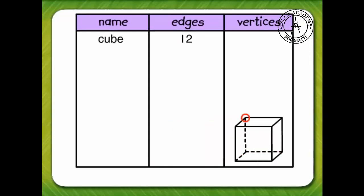How many vertices does a cube have? 1, 2, 3, 4, 5, 6, 7, 8. A cube has 8 vertices.